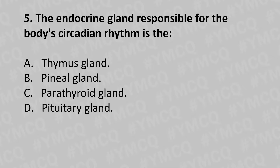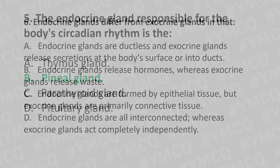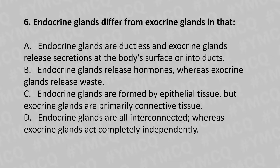Moving to our fifth question. The endocrine gland responsible for the body's circadian rhythm is the: Option A: thymus. Option B: pineal. Option C: parathyroid. Option D: pituitary. And the answer is Option B: pineal.